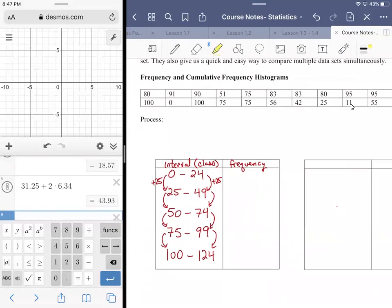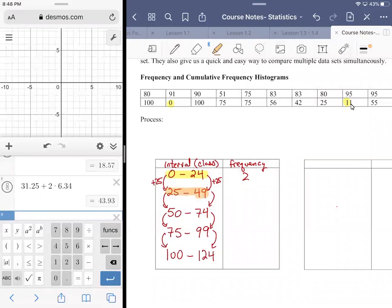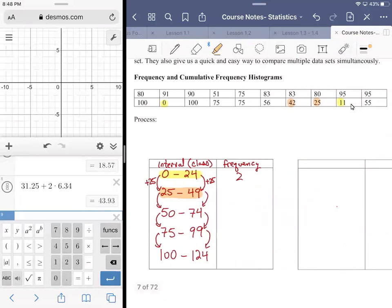But once you have your intervals, it's just a matter of going through the list and saying what falls in what category. So I'm looking for anything that falls in zero to 24. Looks like I have just those two values. 25 to 49, I got my 25, I got the 42, and I think that might be it, so just two there.